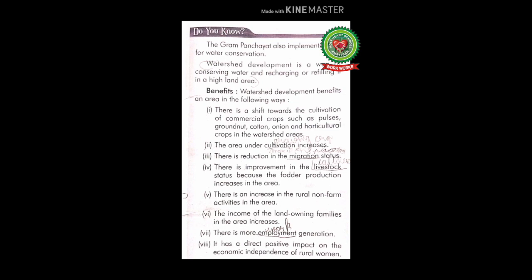Number five: there is an increase in rural non-farm activities in the area. Non-farm activities are those not related to agriculture — for example manufacturing, transporting, communication, etc. Number six: the income of land-owning families in the area increases. Land-owning families are those who have their own land, and due to watershed development their income increases. Number seven: there is more employment generation — due to watershed development there is an increase in employment.